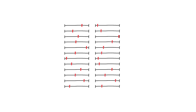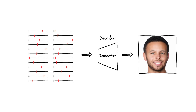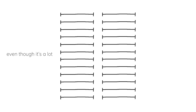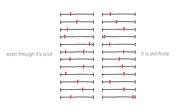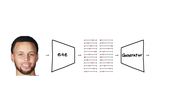When you pass these parameters through a generator — also known as a decoder — it will generate a face. By manipulating these parameters, you can then adjust the attributes, for example, the age of the face. But there are finite numbers of parameters, so you cannot possibly represent every possible face in the world. This is why E4E has its downside.